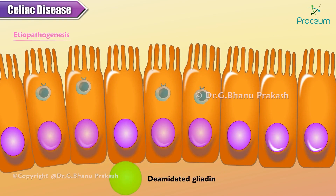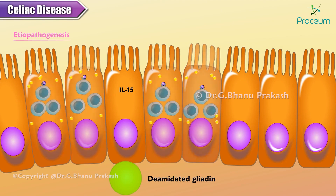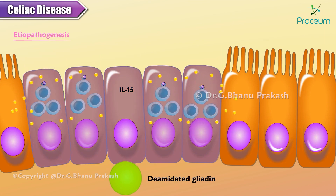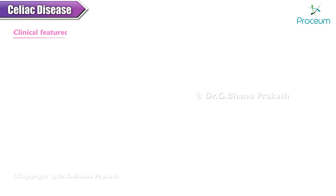The deaminated gliadin also induces epithelial cells to release interleukin-15, which stimulates and causes proliferation of CD8 intraepithelial lymphocytes. Their cytotoxic action damages more enterocytes, allowing further movement of gliadin peptides, which get deaminated and bind to HLA, resulting in a continuous vicious cycle brought about in this disease.